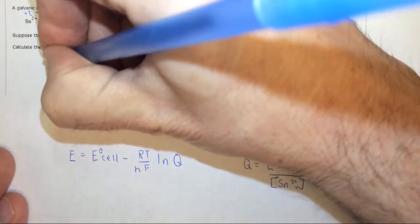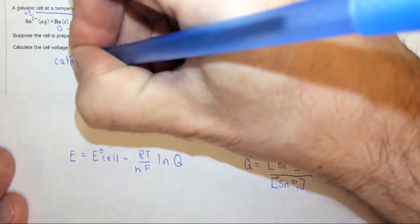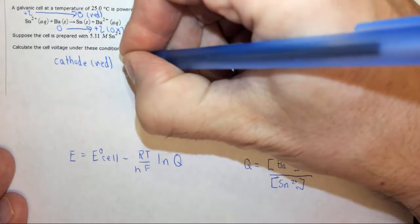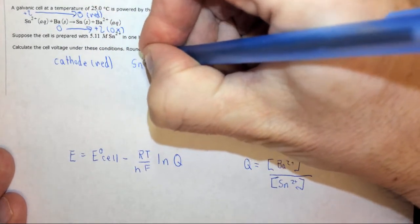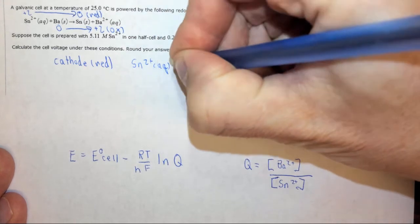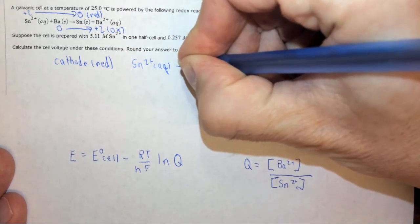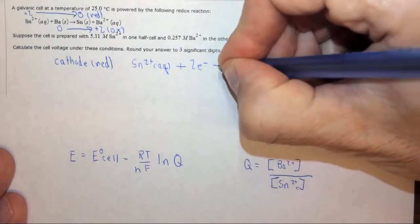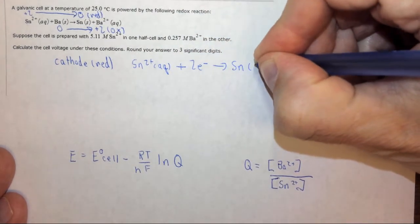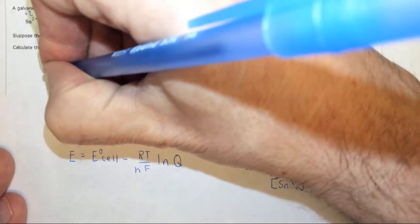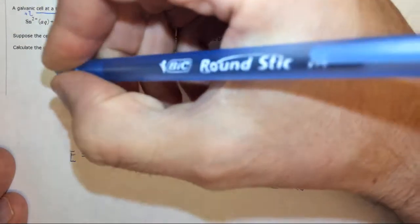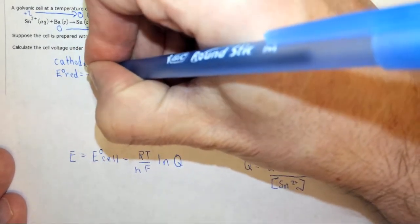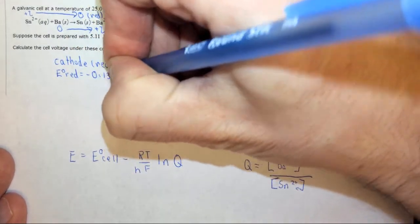So at the cathode where reduction is occurring, what we have is Sn 2 plus aqueous, we have to add two electrons, and then it will form Sn solid. The standard reduction potential for this, looked up on the table, is negative 0.1375 volts.